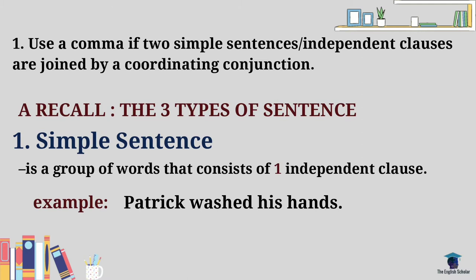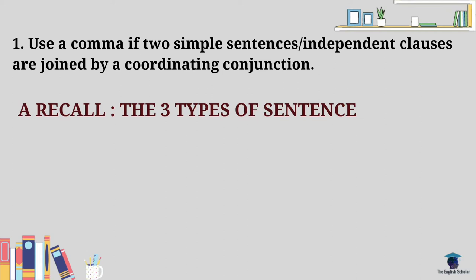For example: 'Patrick washed his hands.' We have 'Patrick' as the subject and 'washed' as the verb. The sentence gives a complete thought — who did the washing? Patrick. What did he do? Washed his hands. In this type of sentence, we do not use a comma.